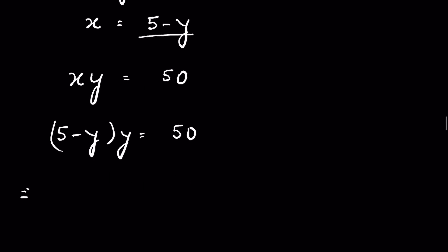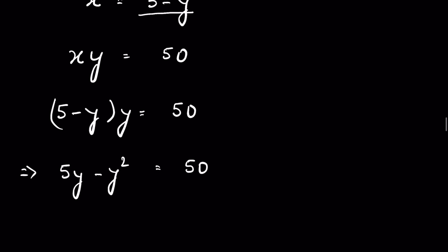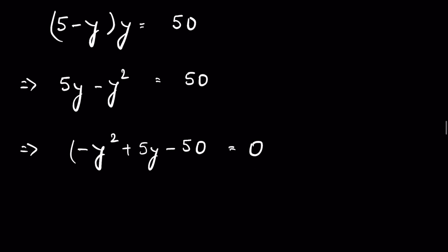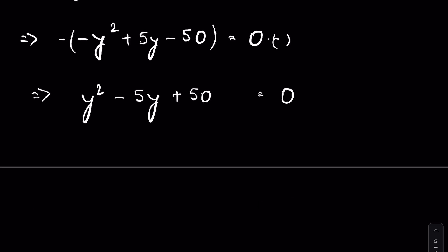So 5y minus y squared is equal to 50, or we can write minus y squared plus 5y minus 50 is equal to 0. Multiplying both sides by minus one, we have y squared minus 5y plus 50 is equal to 0. This is a quadratic equation.